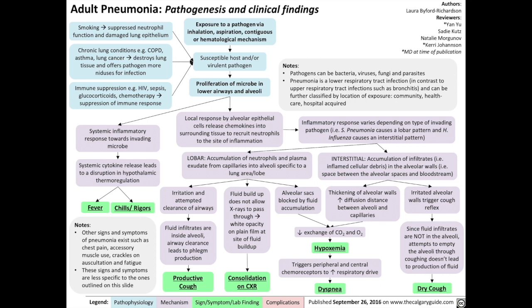Pneumonia is an infection of the lower respiratory tract by pathogens, which can be bacteria, viruses, fungi, and/or parasites. It's a lower respiratory tract infection as opposed to an upper respiratory tract infection, such as bronchitis. Pneumonia can also be classified by where the patient got infected — whether they're in the community, in healthcare settings, or specifically in hospital settings.